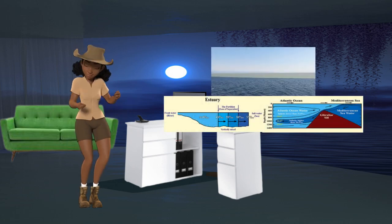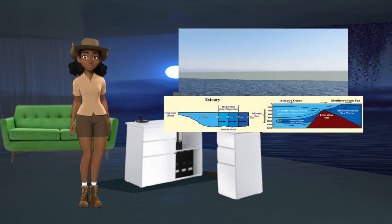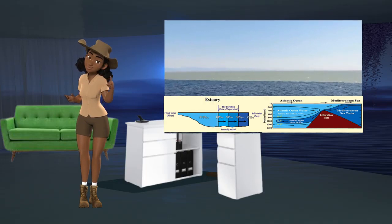For example, Mediterranean seawater is warm, saline, and less dense, compared to Atlantic Ocean water.